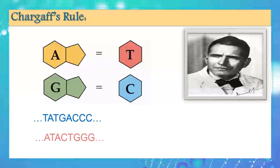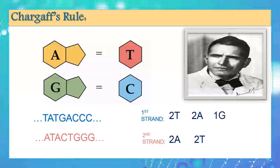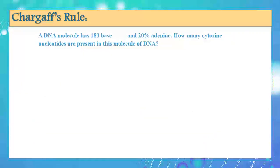Let's verify Chargaff's rule by counting nucleotides in each strand. In the first strand, there are two thymine nucleotides, so in the second strand there are two adenine molecules. Two adenine in the first strand means two thymine in the opposite strand. One guanine pairs with one cytosine, and three cytosine pairs with three guanine. The rule is simple: G must equal C, and A must equal T.